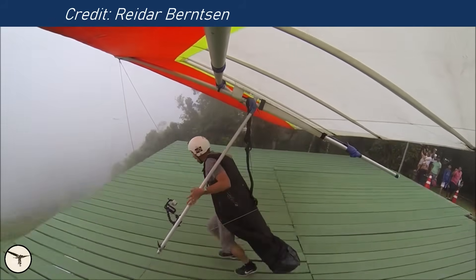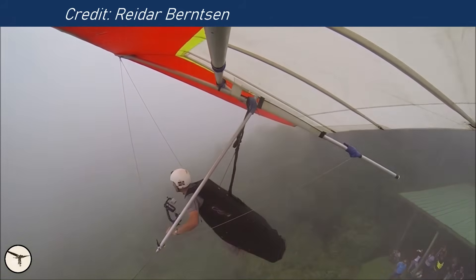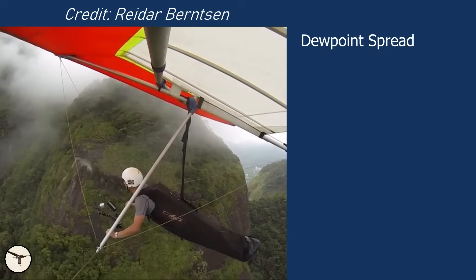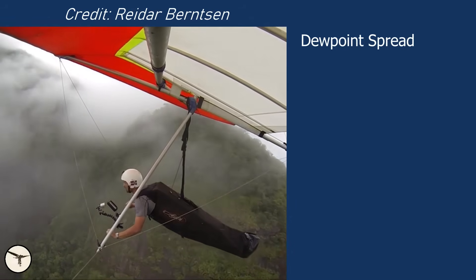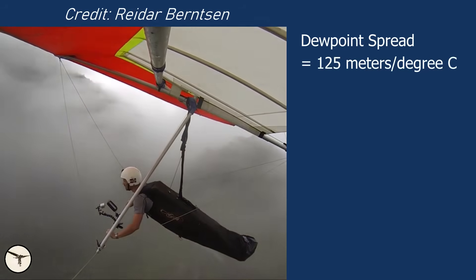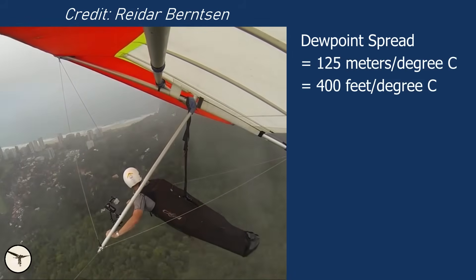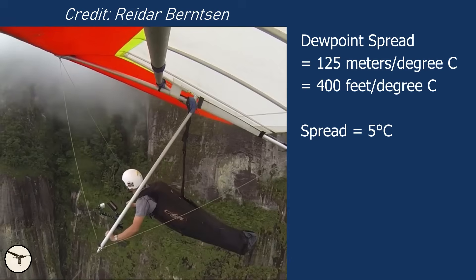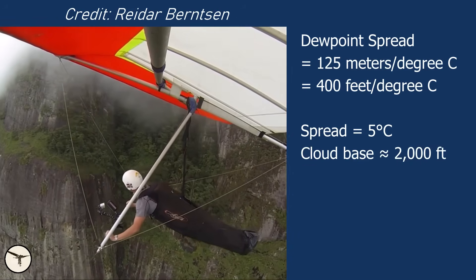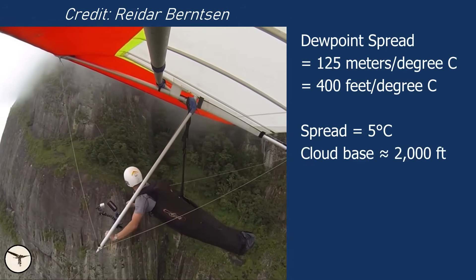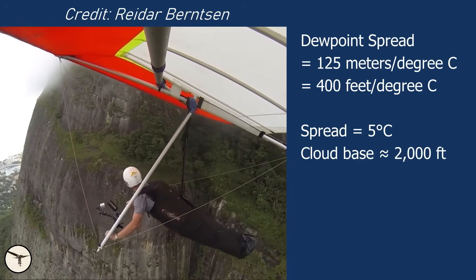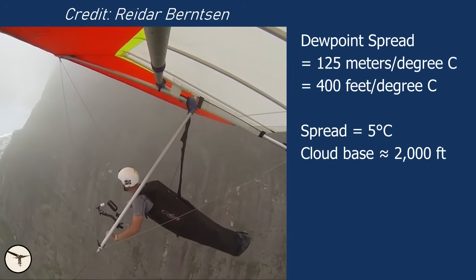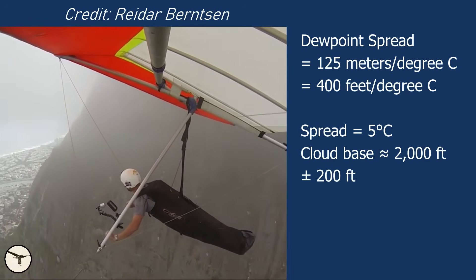As a glider pilot, I learned a useful method for estimating the base of cumulus clouds: each degree Celsius of dew point spread corresponds to approximately 125 meters or 400 feet of cloud base height. For example, if the spread is 5 degrees Celsius, cloud bases are typically around 2,000 feet above ground level. Since temperatures in METARs are rounded to the nearest whole degree, allow a margin of plus or minus 200 feet.